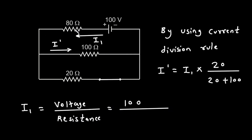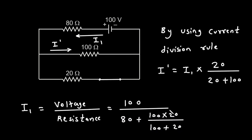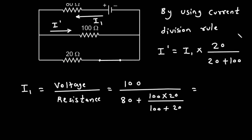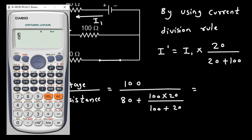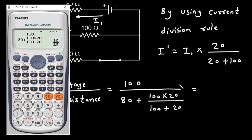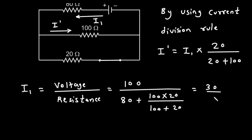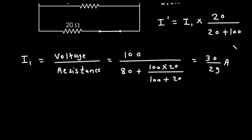The 80 ohm is in series with the parallel combination of 100 ohm and 20 ohm. So total resistance is 80 plus (100 × 20)/(100 + 20). Solving this gives I1 = 100 divided by that total, which equals 30/29 ampere.